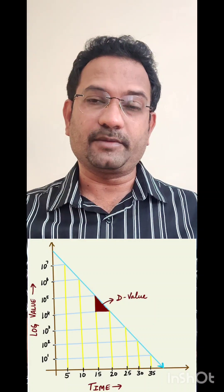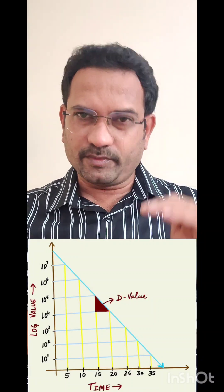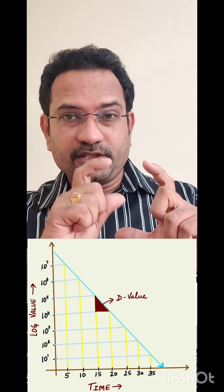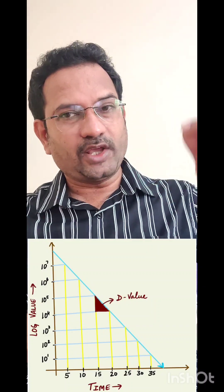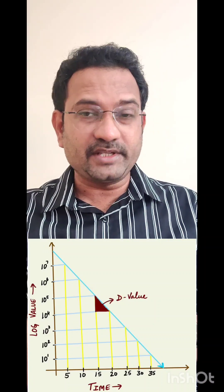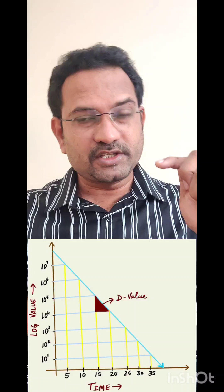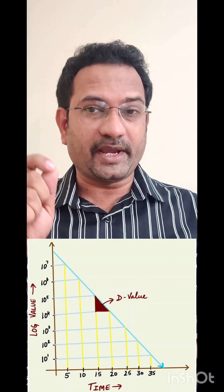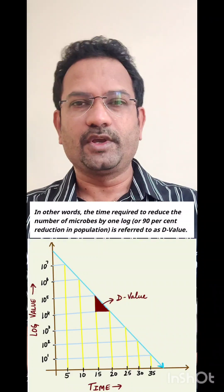Imagine you have 10 to the power of 5 organisms — that is 1 lakh bacteria. By applying heat, the organism number falls. From 1 lakh to 10,000 is a 90 percent drop — 90,000 organisms die. The time corresponding to this drop — for example, from 20 to 25 minutes, so 5 minutes — is known as the D value. D value is the time taken to reduce microorganisms by 90 percent.